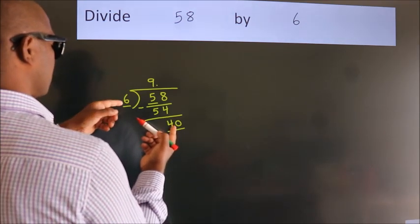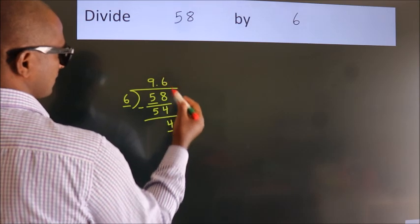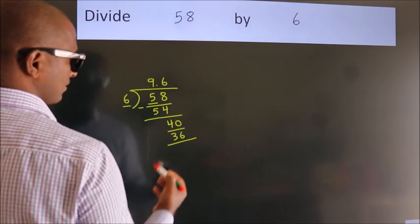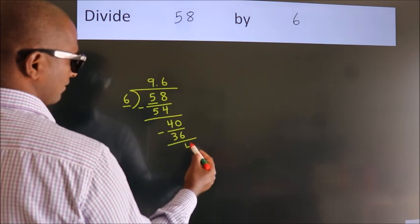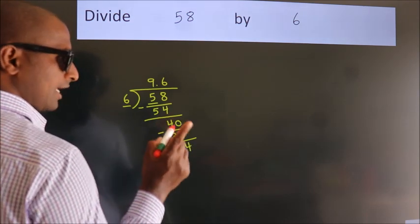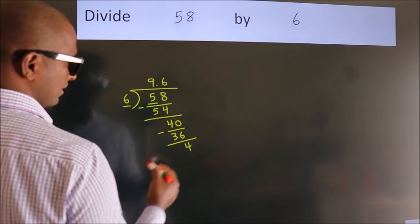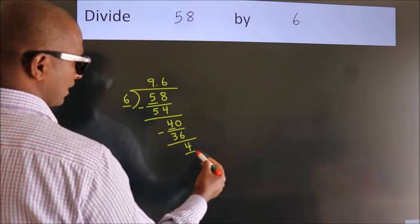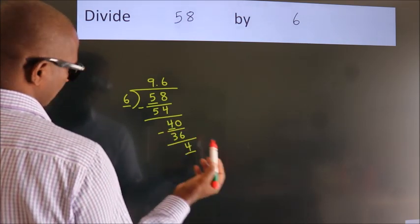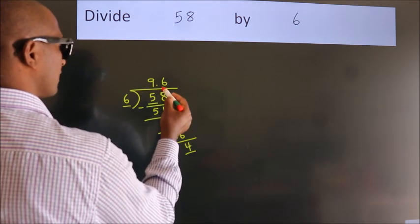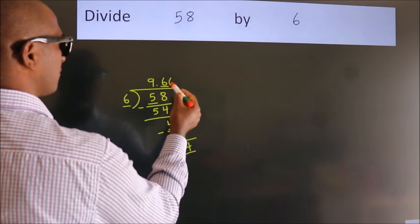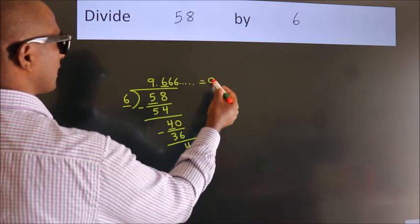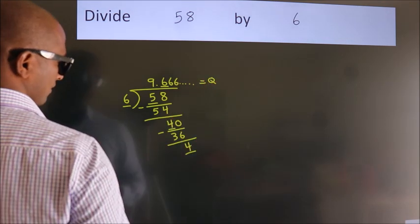in the 6 table is 6 sixes, 36. Now we subtract. We get 4. Now you observe, we had 4 here and we got 4 again. That means this number keeps on repeating. So this is our quotient.